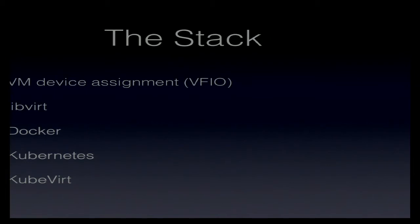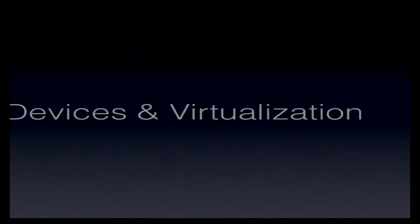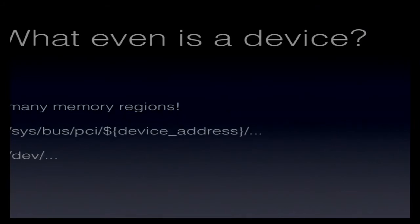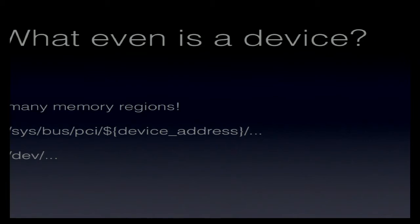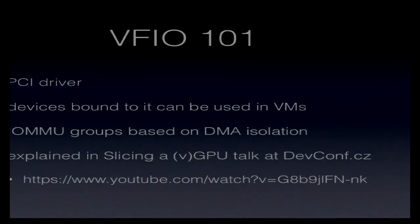Let's start with a philosophical question: what even is a device? It turns out you can ask 10 people and get 10 responses, because it depends on how far you are from the kernel. For someone, a device is the actual GPU you buy in a store and plug into a computer. For someone in the kernel, it could be just a bunch of memory regions. For us working on the node, it's usually exposed as several paths in the system — it could be a sysfs PCI device or just under /dev. For example, /dev/kvm is also a device.